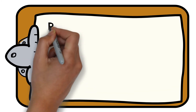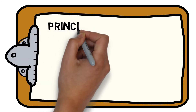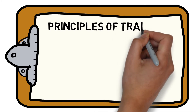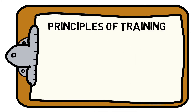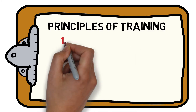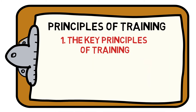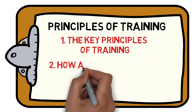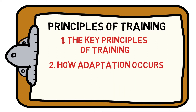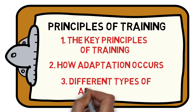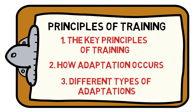Welcome to the SportsScience Hub's guide to everything you need to know about the fundamentals of the principles of training. We will help you understand the three key principles of training, how adaptation occurs, and the different types of adaptations achieved through training. Let's get started.